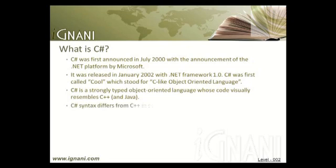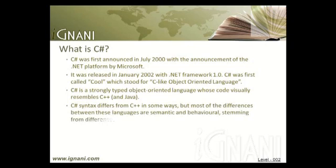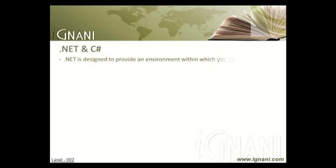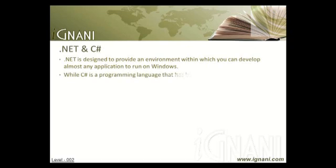C-Sharp syntax differs from C++ in some ways, but most of the differences between these languages are semantic and behavioral, stemming from differences in the runtime environments in which they execute. .NET is designed to provide an environment within which you can develop almost any application to run on Windows, while C-Sharp is a programming language designed specifically to work with the .NET framework.